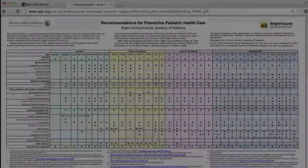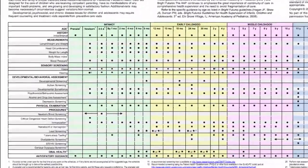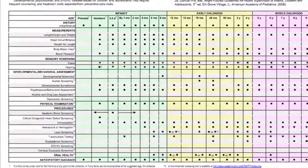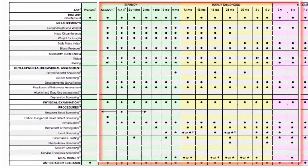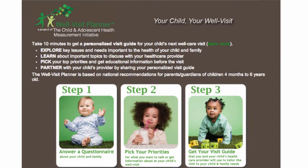Why use the Well Visit Planner? The American Academy of Pediatrics recommends 16 well-child visits by age 6 and requires community partners such as Early Head Start to monitor and report on each of these well visits. But families struggle to get to the pediatrician, and once they're there, they may not know how or feel they have the time to talk about what is most important to them.